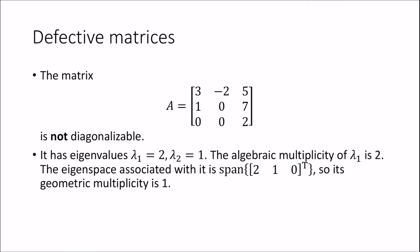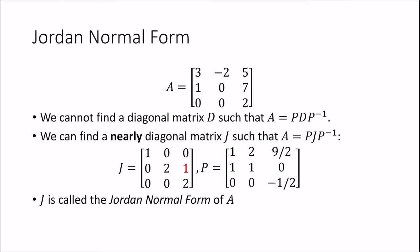So A is not diagonalizable. This means we will not be able to find a diagonal matrix D, such that this holds. But we can do something pretty close to diagonalization. We can find the Jordan normal form of A, denoted J here, so that this holds.